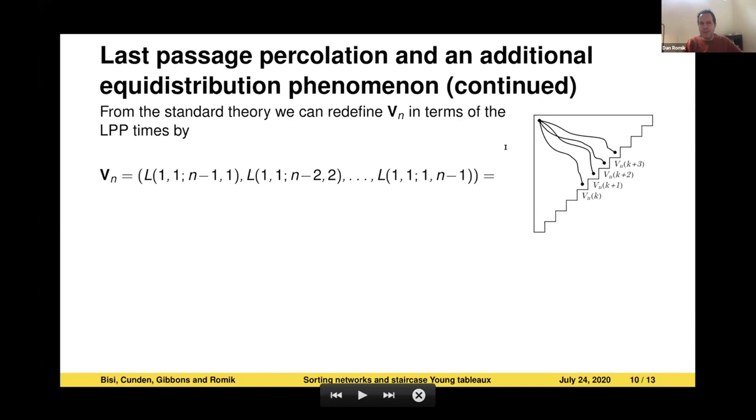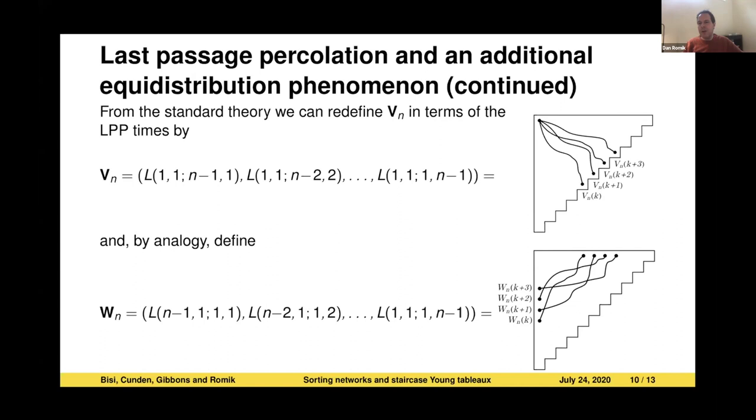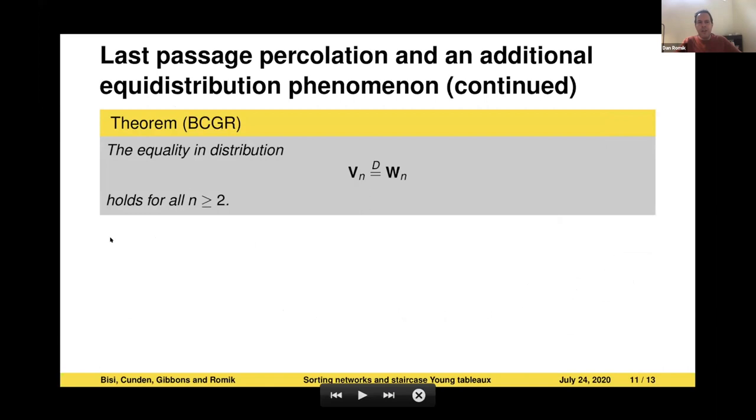With that definition, it's known from standard theory that what I defined as the vector V_n can actually be redefined in terms of these times by the following formula, which you can ignore because there's a picture. I always prefer pictures to formulas. The picture says you look at all the last passage percolation times between the corner of the staircase diagram and the diagonal points. That's the vector V_n. By analogy with that, I can define the vector W_n where I just flip vertically, flip each of those two pairs of vertices. That gives me another vector which I label W_n. A priori, there's no obvious reason to explain that V_n and W_n will be very related to each other, but that ends up happening. That is, in fact, a theorem. We have proved that V_n and W_n are equal in distribution for all n. So again, there are three interesting vectors. They all have the same distribution, but in one case, we haven't been able to prove it.